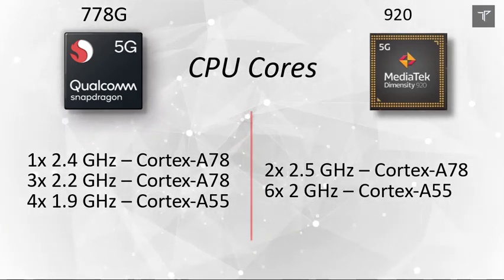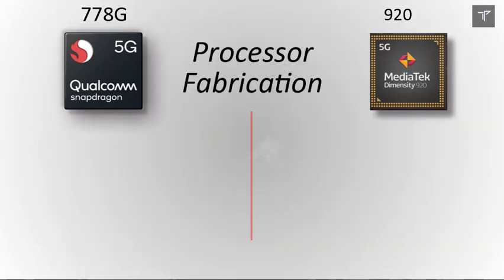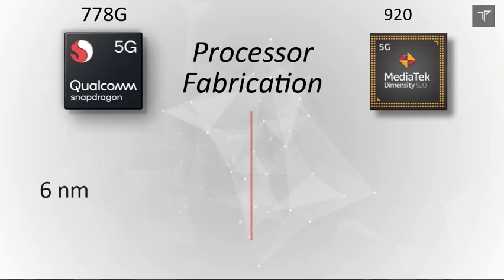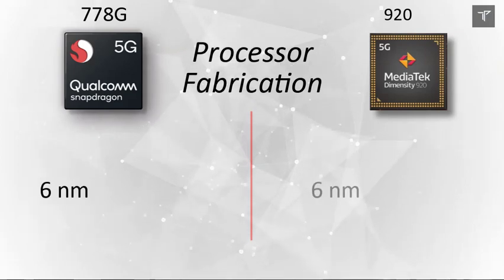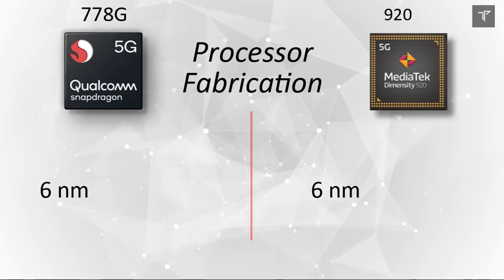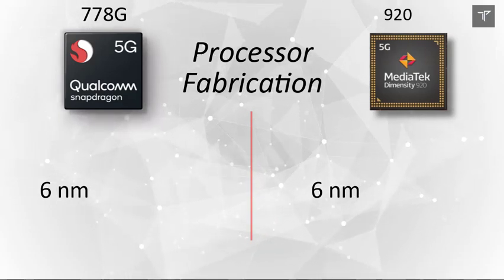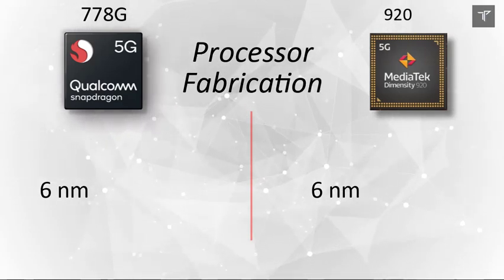The CPU cores are better on the Mediatek Dimensity, but when it comes to processor fabrication, both are based on 6 nanometer, which means both are decently power efficient when compared to previous generations of mid-range processors.